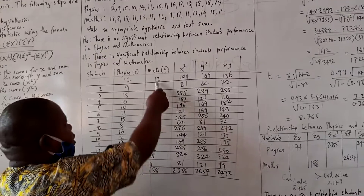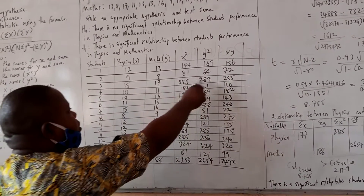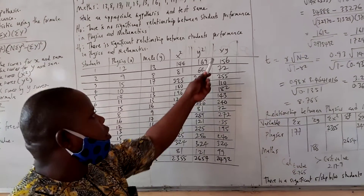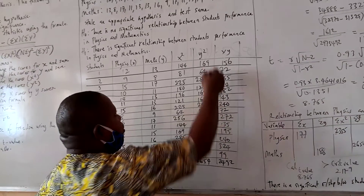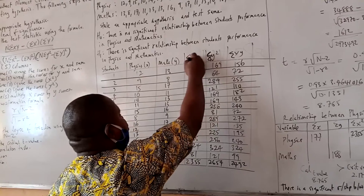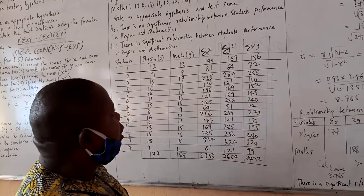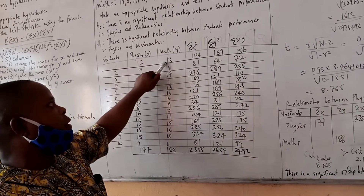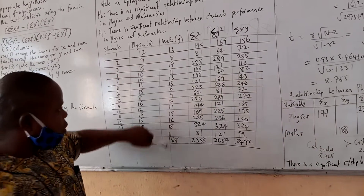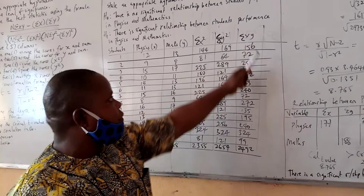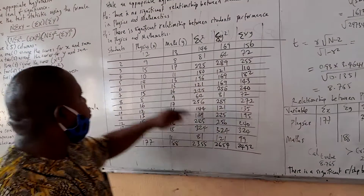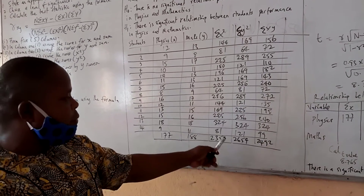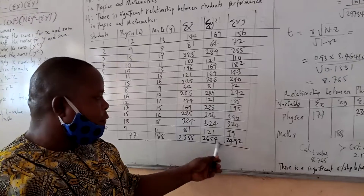For the Y squared column, for instance: 13 times 13 is 169, 8 times 8 is 64, 17 times 17 gives 289. In the last column, which is XY, we multiply the physics and mathematics scores — not the squares, only the raw scores. For example: 12 times 13 gives 156, 9 times 8 gives 72, 15 times 17 gives 255, and so on. The summation totals are: summation X² is 2355, summation Y² is 2654, and summation XY is 2492.